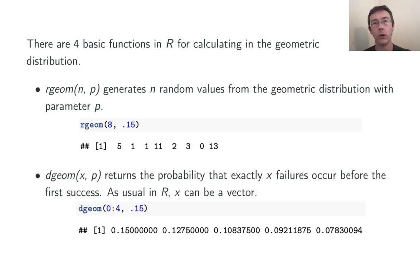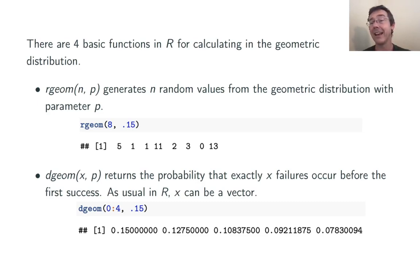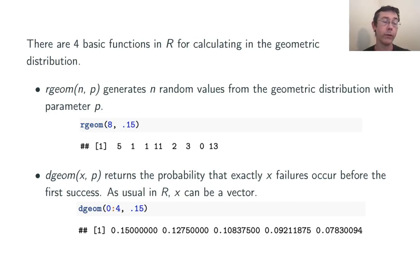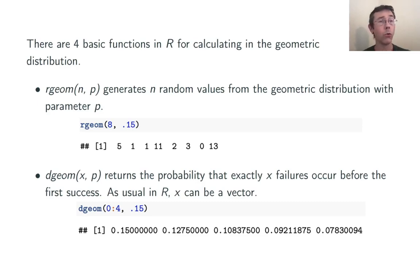dgeom is the probability mass function. It returns the probability that you get exactly x failures before the first success. As usual in R, x can be a vector. So for instance, dgeom(0:4, 0.15) gives you the probability of getting 0, 1, 2, 3, or 4 failures before the first success.